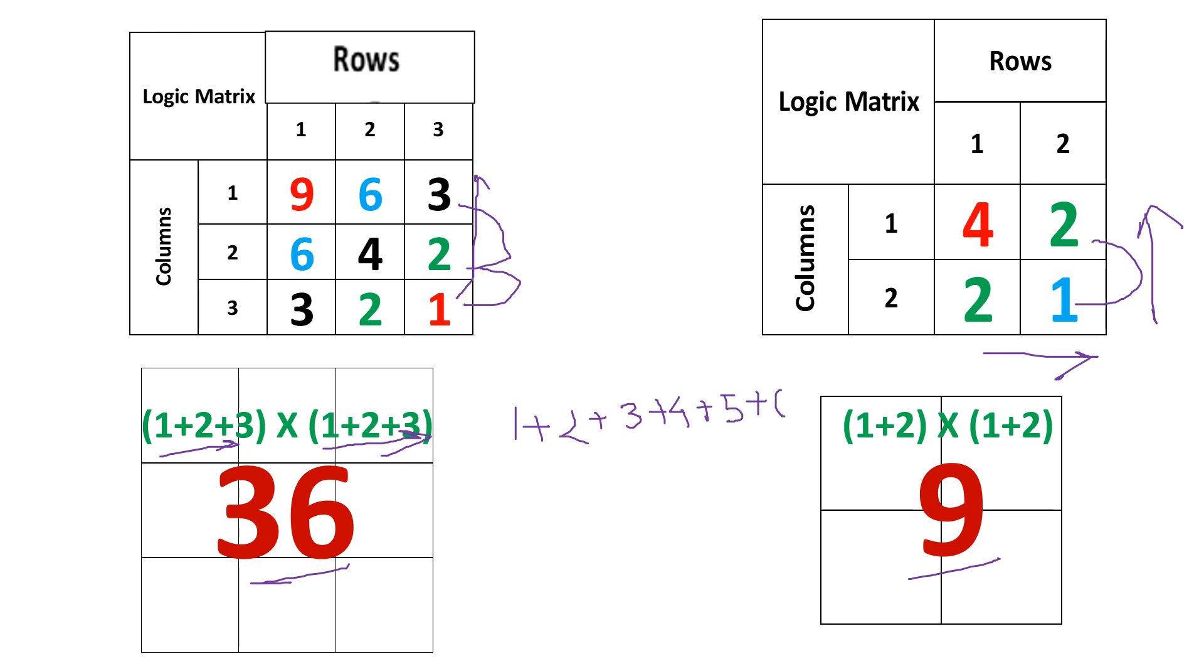What will it give you? That is 1 plus 2 is 3, plus 3 is 6, plus 4 is 10, plus 5 is 15, plus 6 is 21. And then you are supposed to multiply it with the same number. That is 21 into 21, and then the answer will be 441.